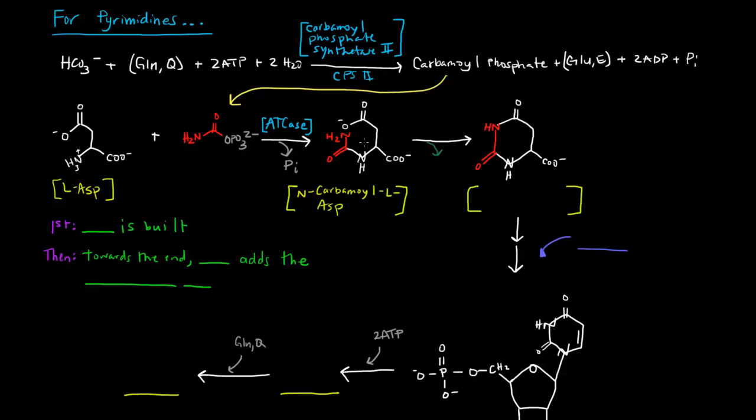Once we have this N-carbamoyl L-aspartate around, we're going to lose some water to form this bond here. We're losing this H2 and this O here. And then we get this molecule here. And this molecule is called dihydroorotate. What's important to understand is that what we're doing here is that we're forming this ring. And this ring is basically the ring of the pyrimidine that we've talked about before. So that's what we're creating. This ring is created.